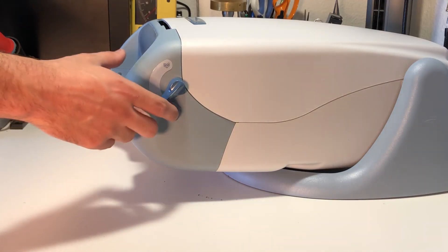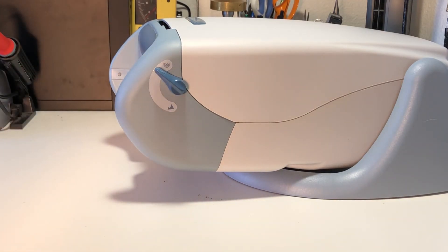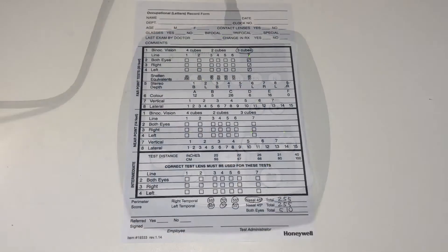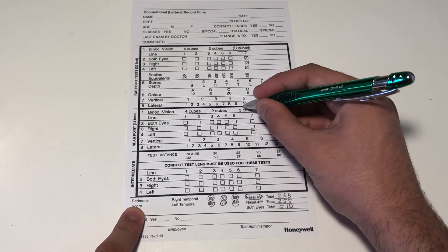Now turn the near far switch to the near position, pointing towards the book. Repeat the test at slides 1, 2, 3, and 4 using the same procedures. Record the results in the near point section of the record form.